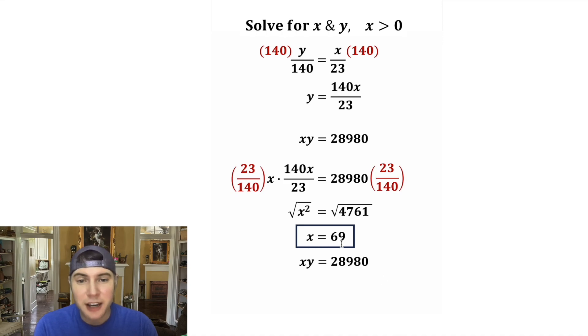Now for this equation, since we know that x is equal to 69, we can plug in 69 for this x. And after we divide both sides by 69, we get y is equal to 420. And we can put a box around that.